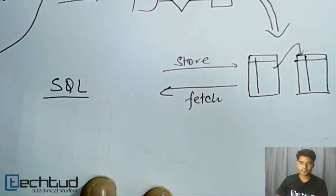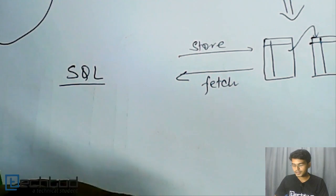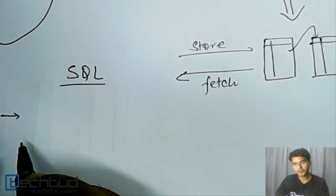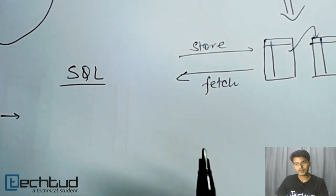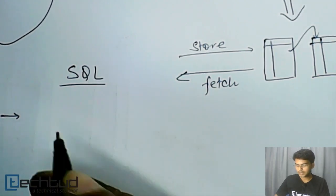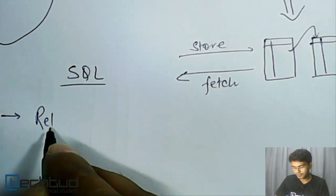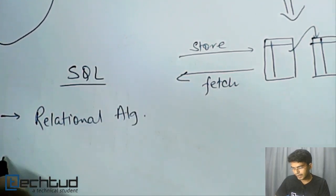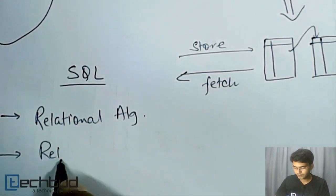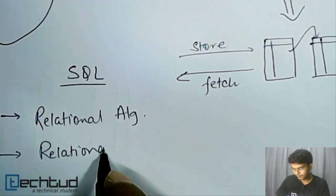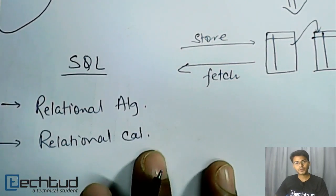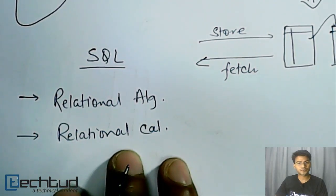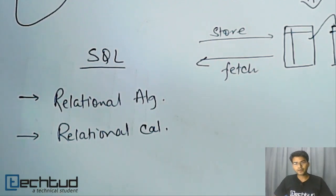So before we go further, we have to understand two formal languages which are very useful to derive structured query language. So these languages are relational algebra and relational calculus. So we will start with relational algebra, we will understand relational calculus, and then we will move on to SQL.